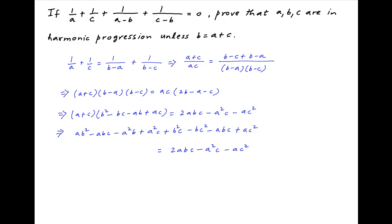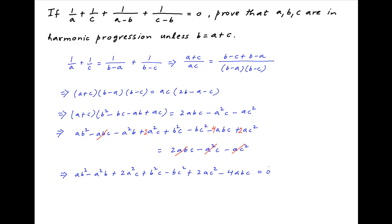Moving all terms to the left-hand side, we have ab squared minus a squared b plus 2abc plus b squared c minus bc squared plus 2ac squared minus 4abc is equal to 0.